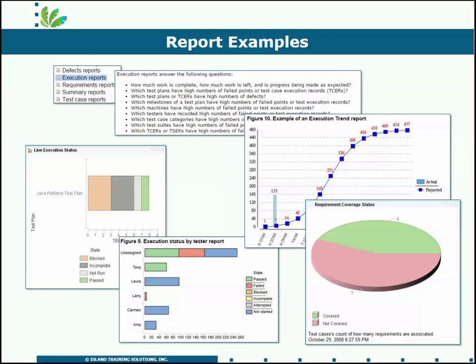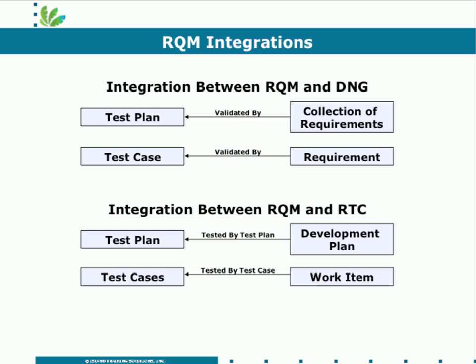How much work is complete? How much is left? Which test plans, test cases, or execution records have high numbers of failed points? What is my test coverage? Down in the lower right corner, of the requirements I've built up in my requirement tool, how many of those requirements have test cases implemented for them? That's a very interesting report that leads us to the last aspect of RQM we're going to cover — integrations with the other JAZZ tools. Here we're looking at a simple description of how RQM integrates with DNG, the DOORS Next Generation Requirement Tool.